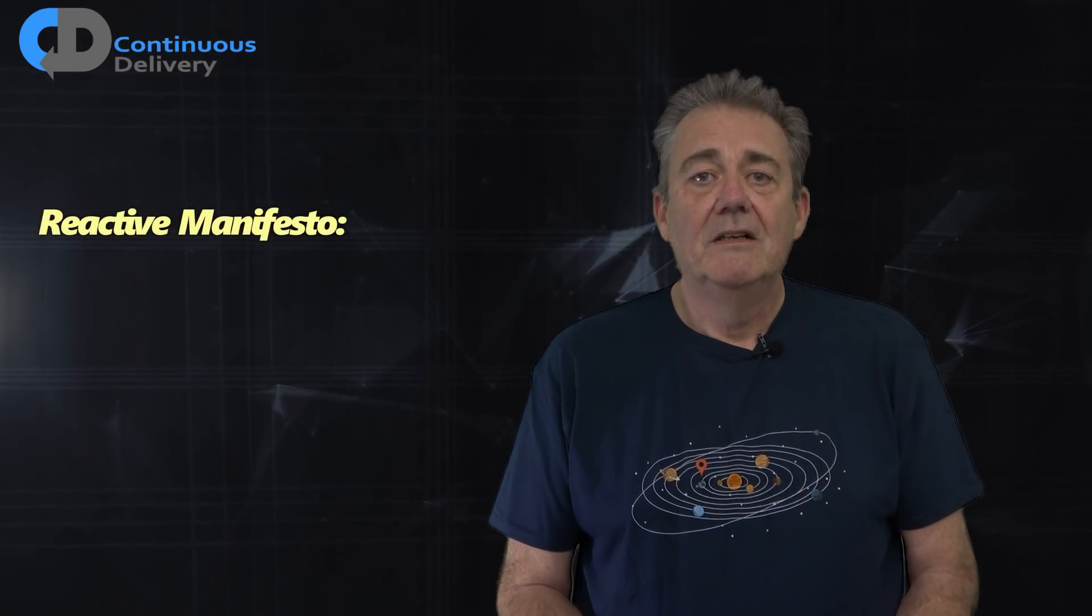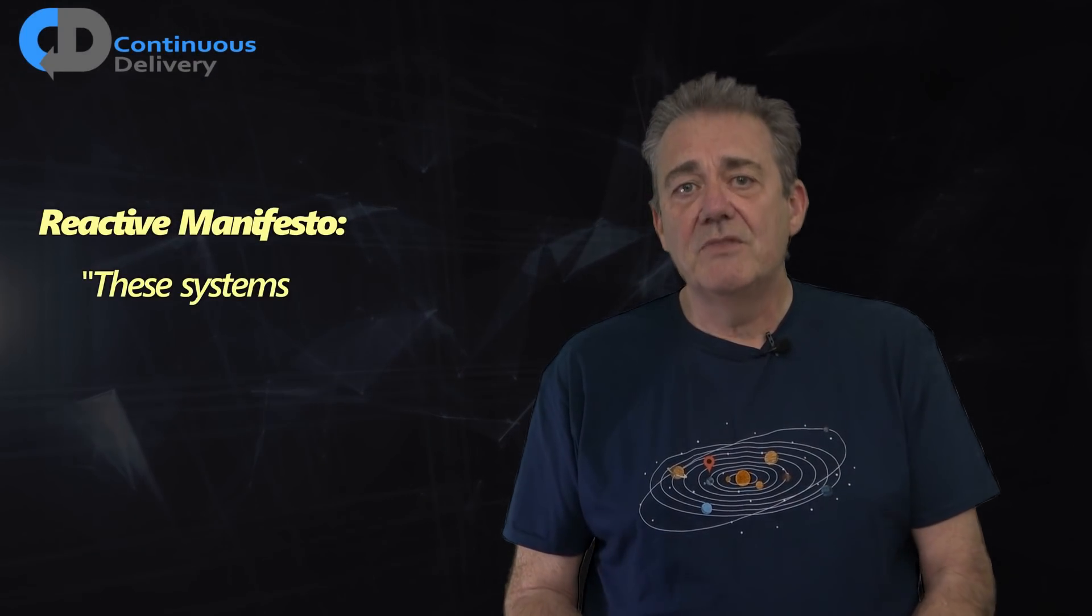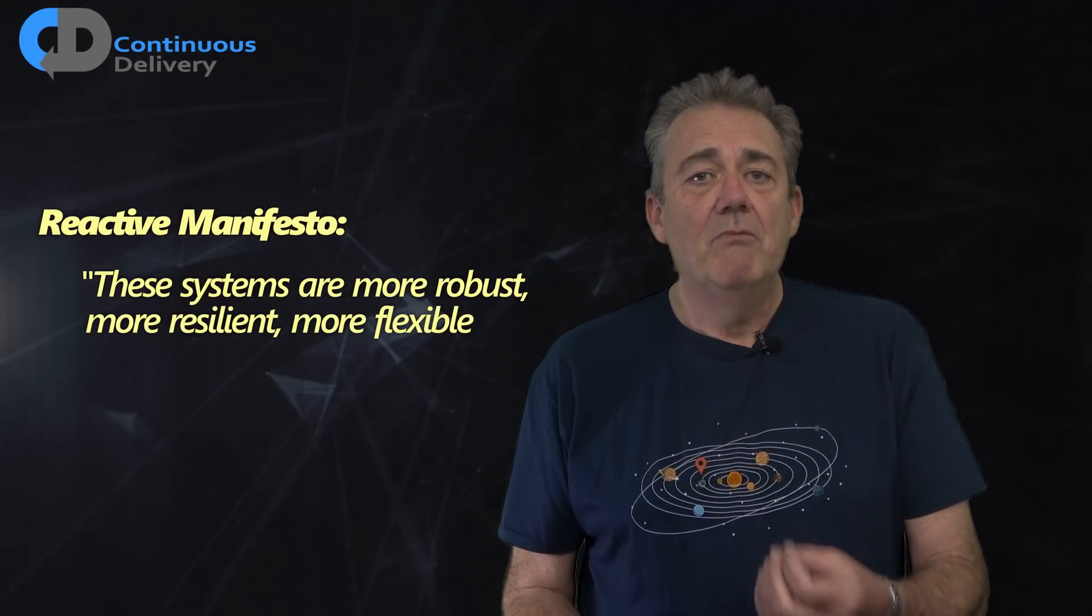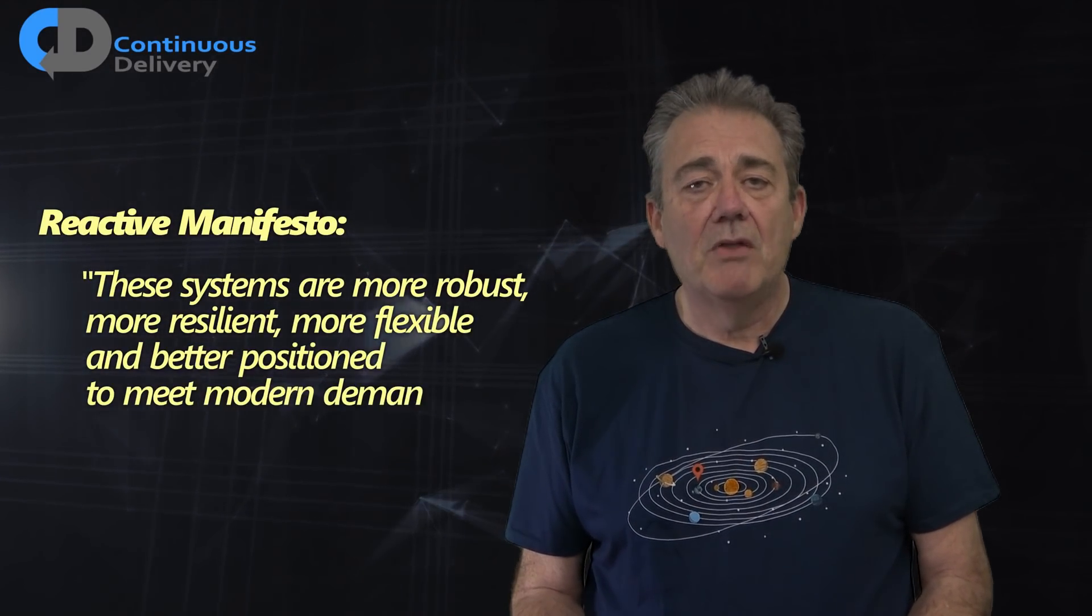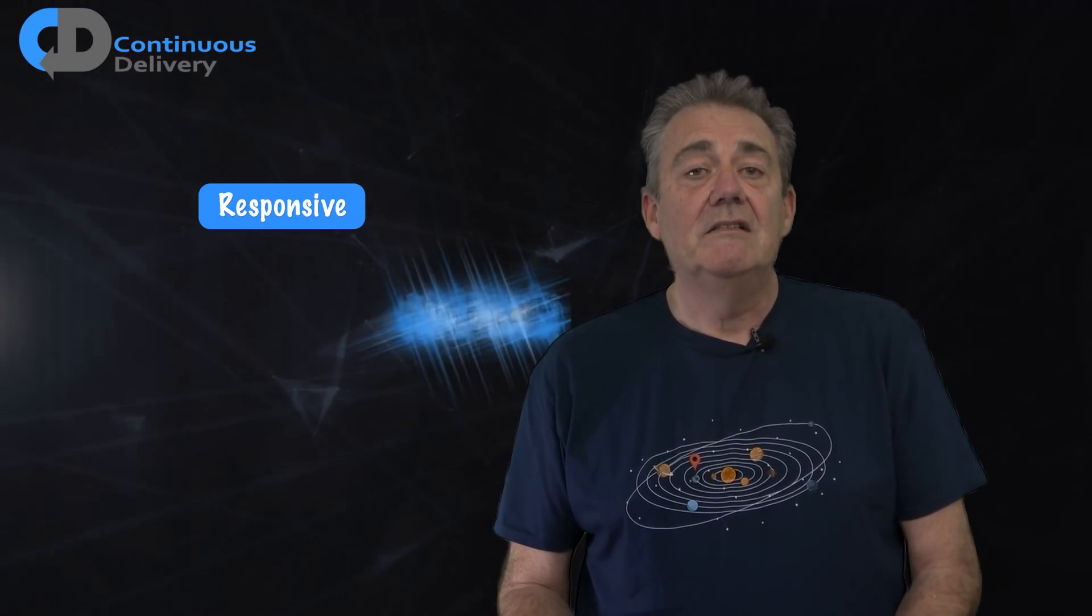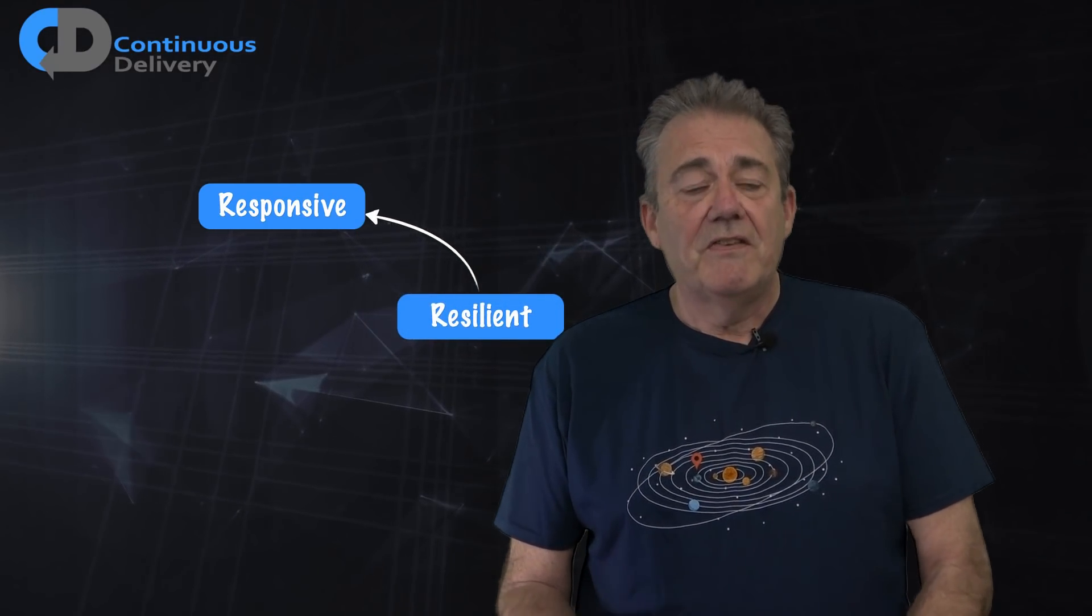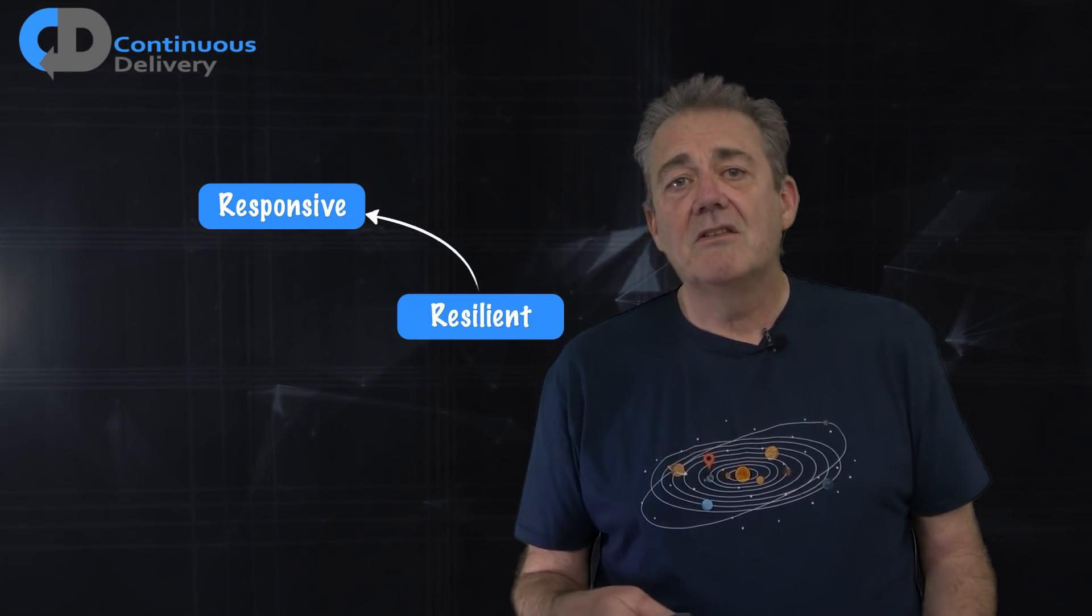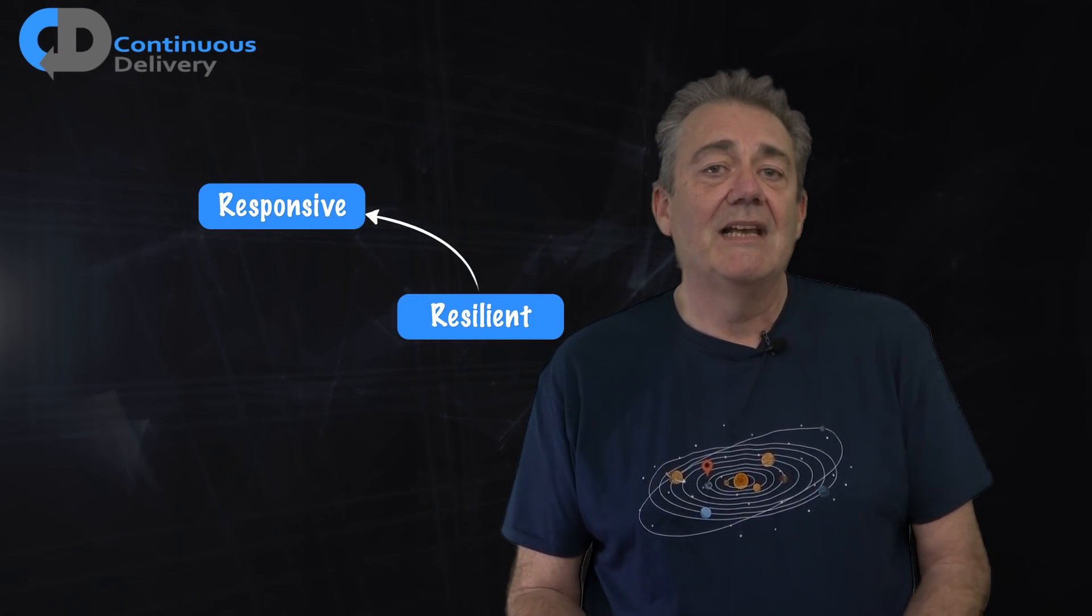So what's this all about? A reactive system is a distributed system that exhibits a number of useful, interesting characteristics. To quote the manifesto, these systems are more robust, more resilient, more flexible, and better positioned to meet modern demands. A reactive system is responsive. This means that it responds in a timely manner. This is a cornerstone of usability and also means that reactive systems are very quick to detect problems when they begin to arise. They're resilient. That is, they remain responsive in the face of failure. Resilience depends on replication, containment, isolation, and delegation.